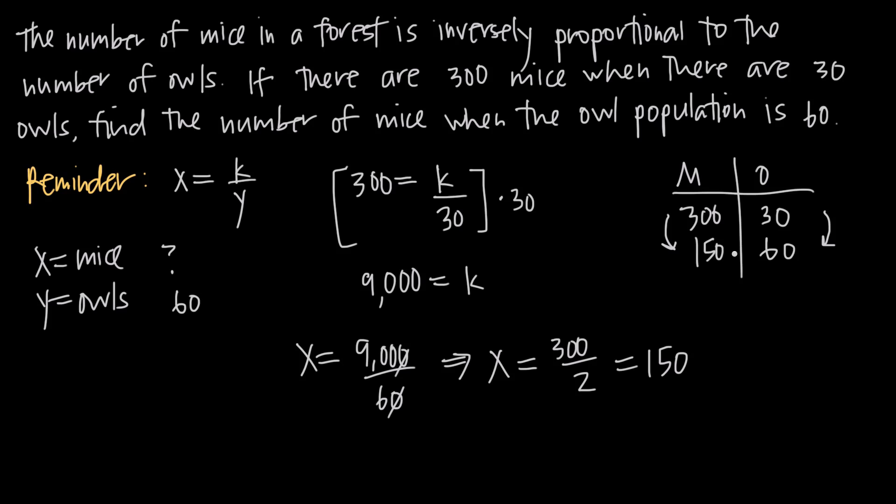The other way we can look at this, and these problems aren't always going to be this simple, but we were told that the owl population was originally 30 and then it went to 60. So we can see that when this happened it doubled because 30 times 2 is 60. When the owl population doubles, the mice population gets cut in half. It goes from 300 to 150. So we've shown the inverse relationship. We know that there are 150 mice when there are 60 owls.